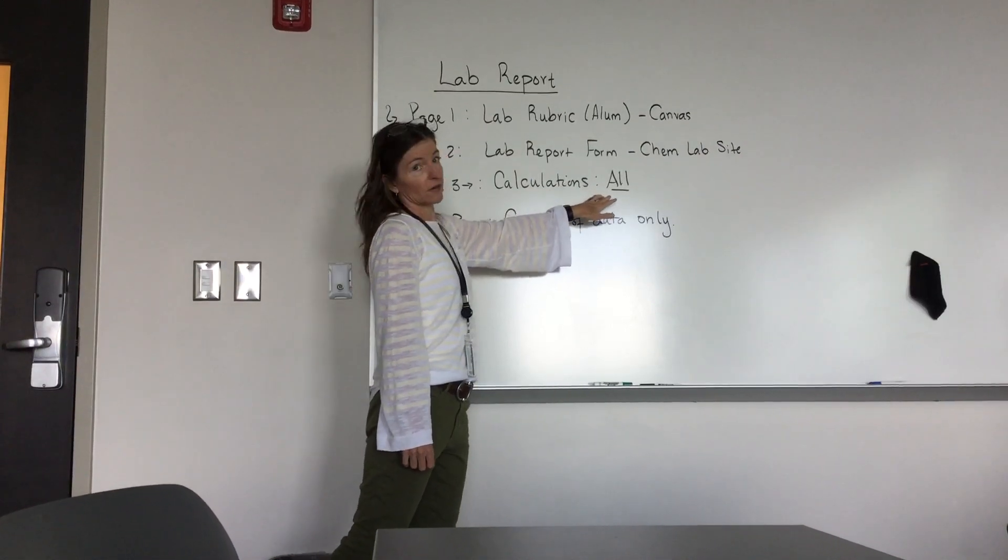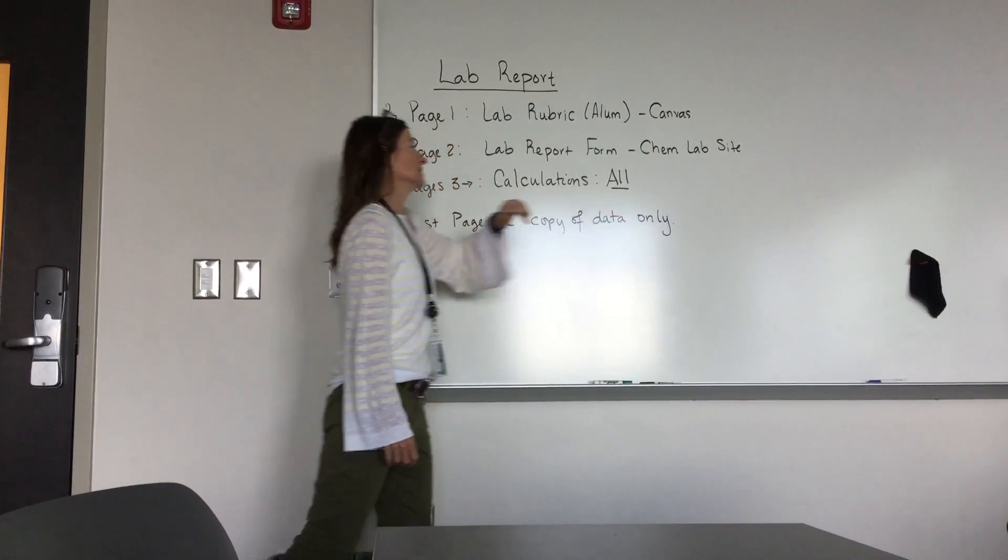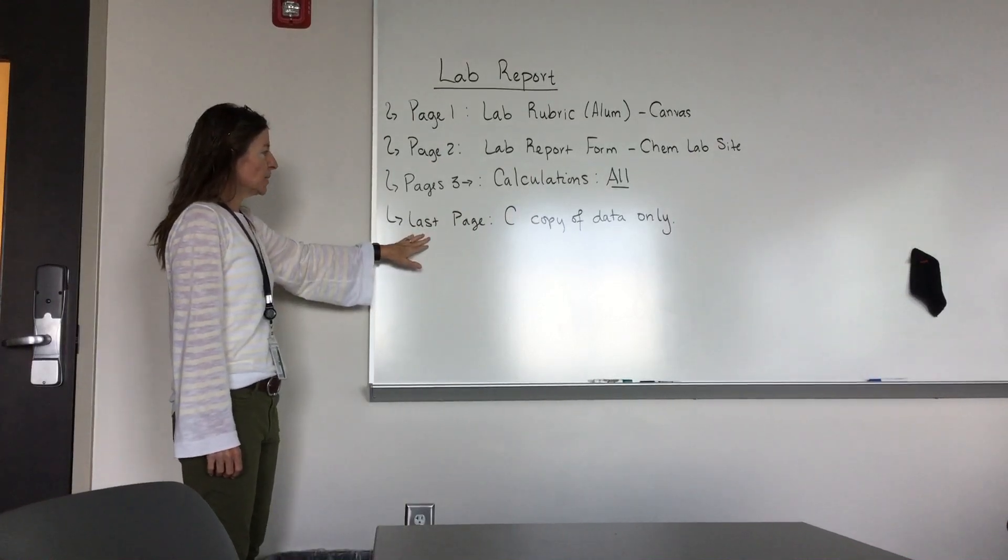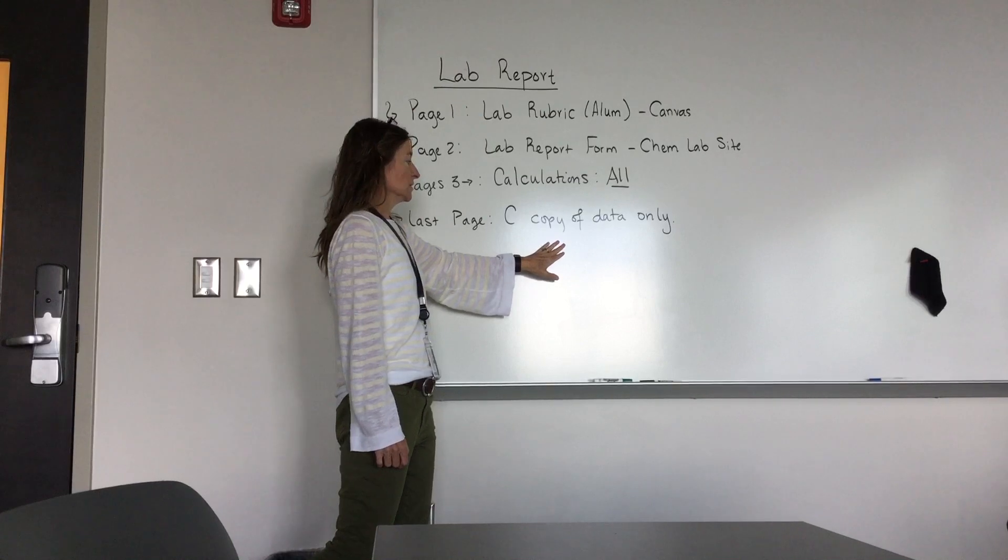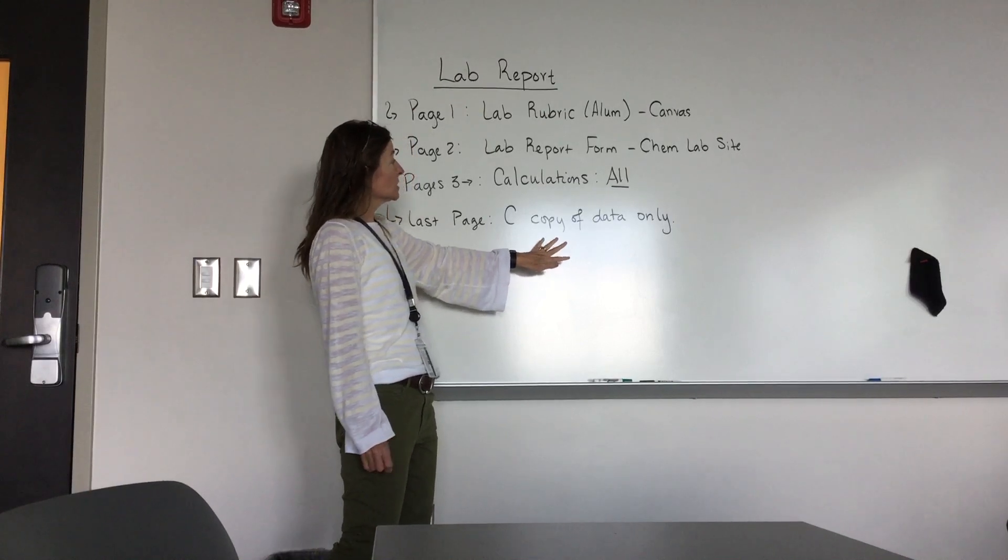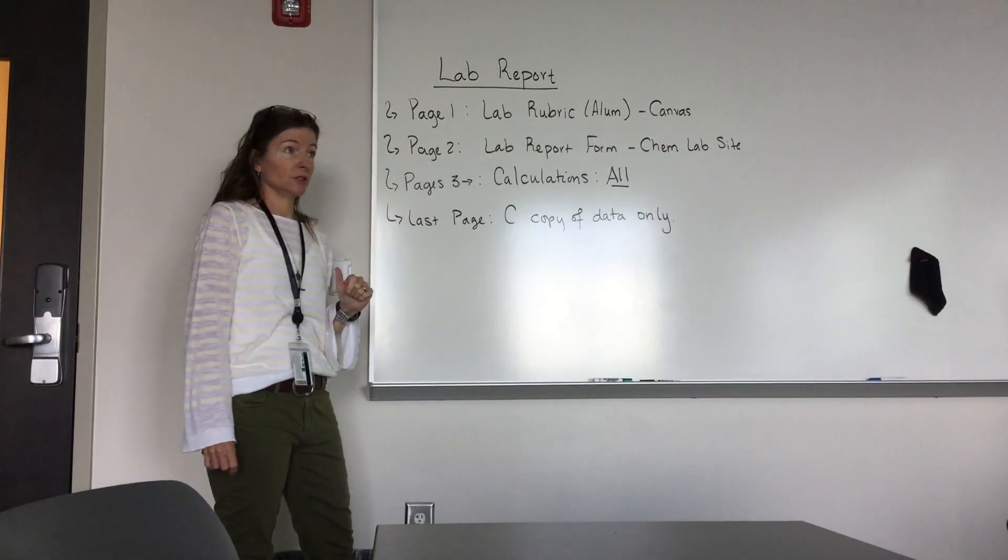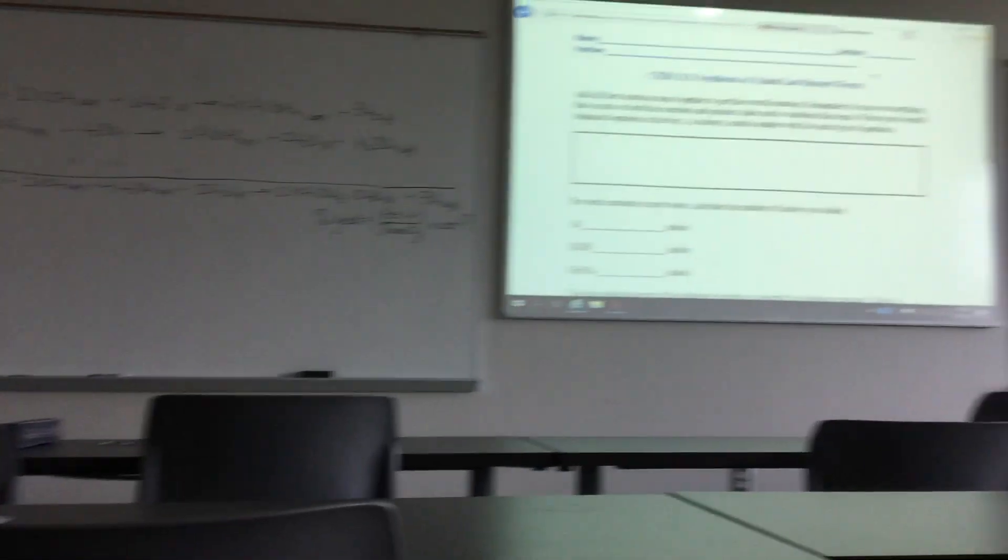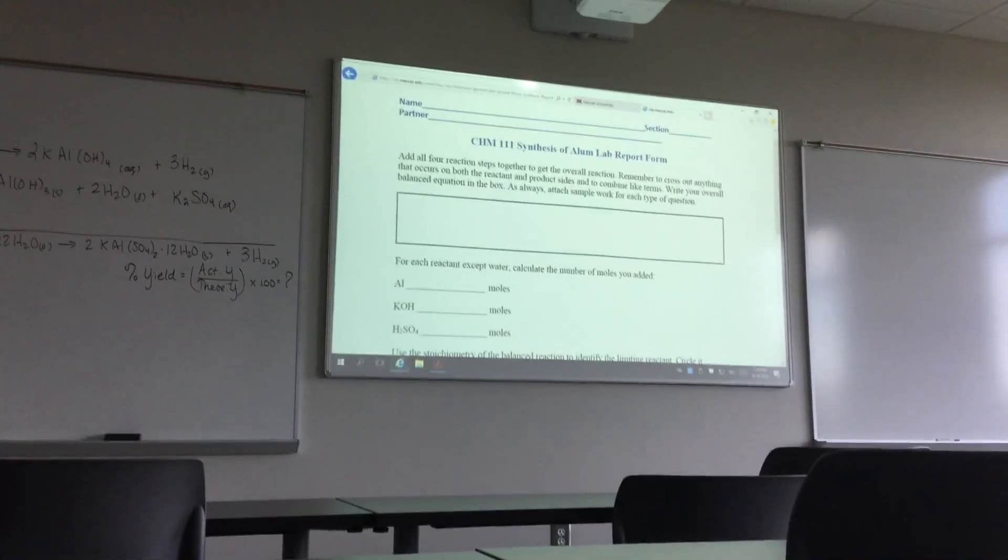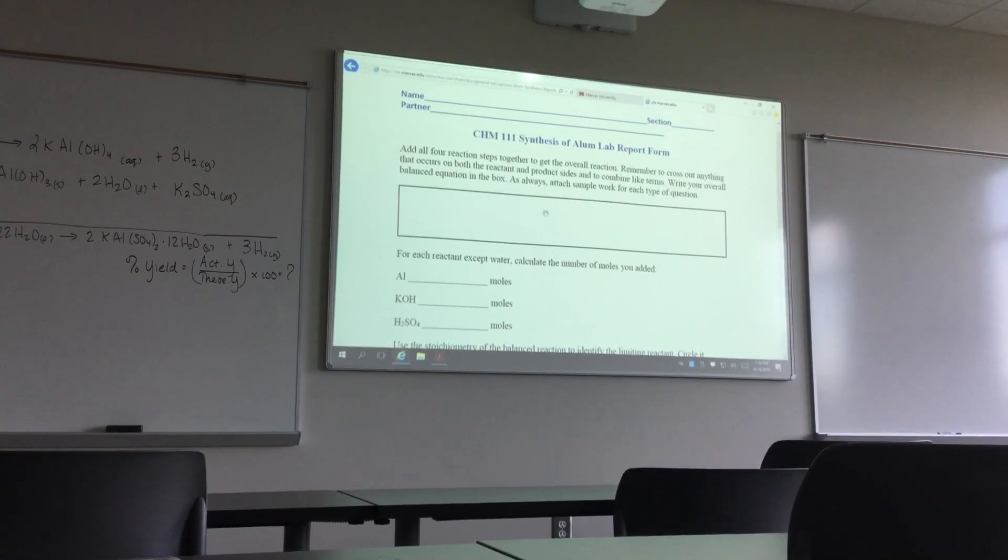Pages three on, I want all the calculations for the alum lab. Every calculation you do, I want to see it. The very last page should be the carbon copy of your data only. Check your email or syllabus to know when the lab report is due. Now let's go to the board so you can see the lab report form.